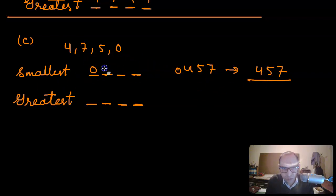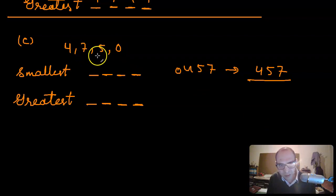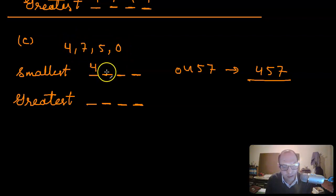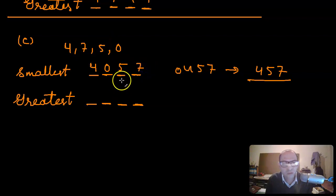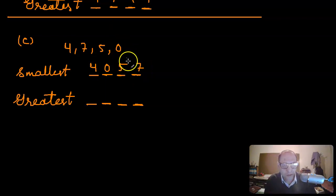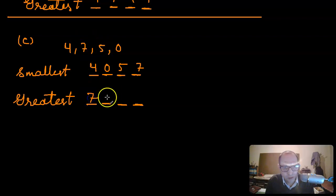Since I cannot start with zero, I have to start with the next smallest digit after zero, which is four. Now this place value I can fill with zero, then the smallest between five and seven is five, and then seven is left. So the number is four thousand and fifty-seven, which is the smallest four-digit number. For the greatest, I start with the largest digit — seven — then five, then four, then zero: seven thousand five hundred forty.